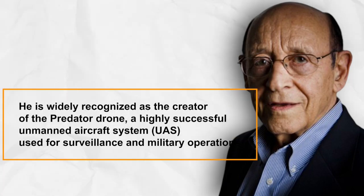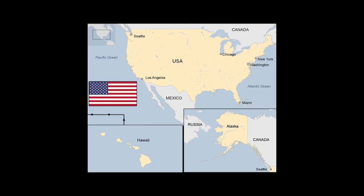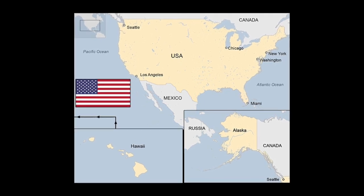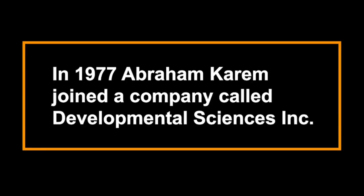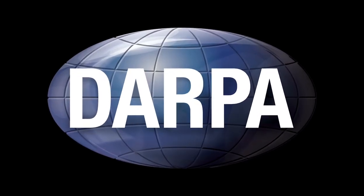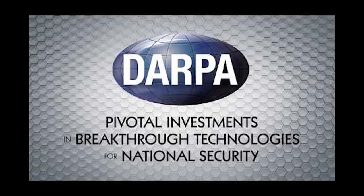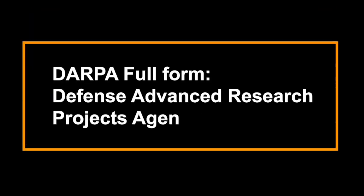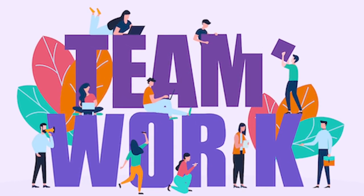His patents covered different material components, subsystem innovations, and mechanical devices, showcasing his talent. He moved to the US in 1977 and joined a small company called Developmental Sciences Inc., which had offered Israel a drone system in 1973 — a connection that helped him get the job. He worked on DARPA-funded projects developing UAVs (unmanned aerial vehicles).